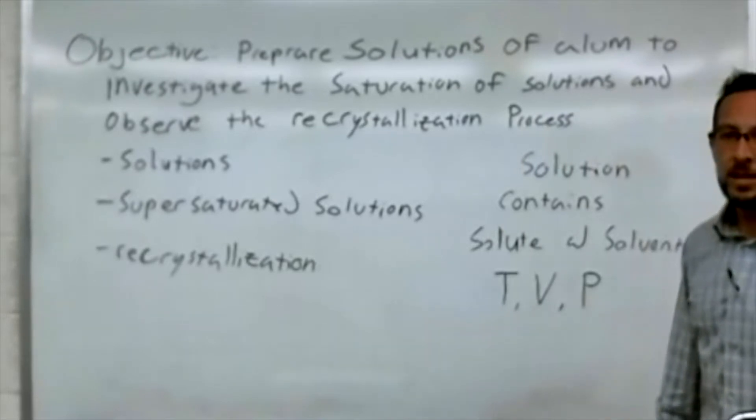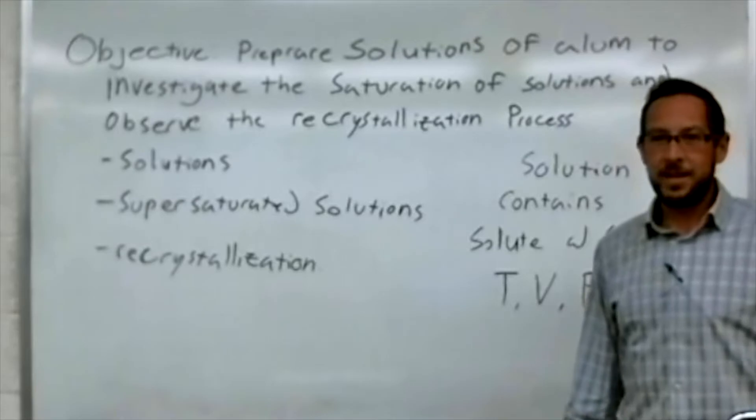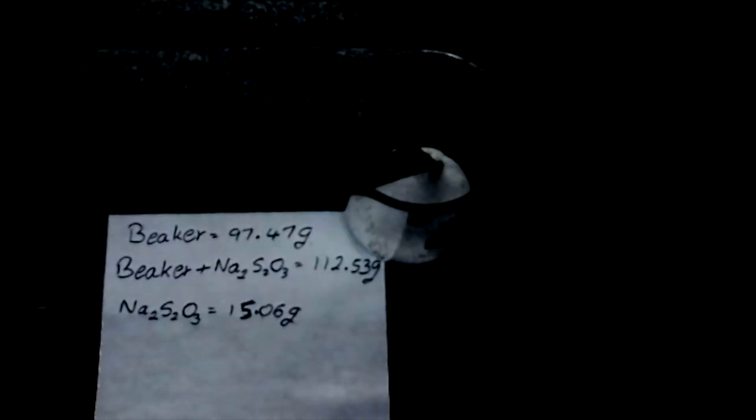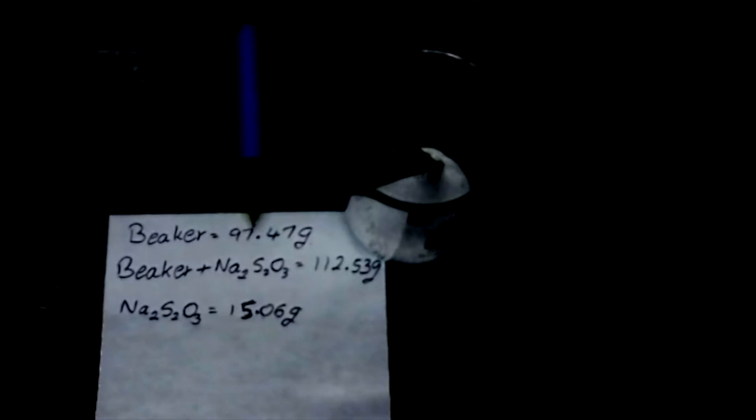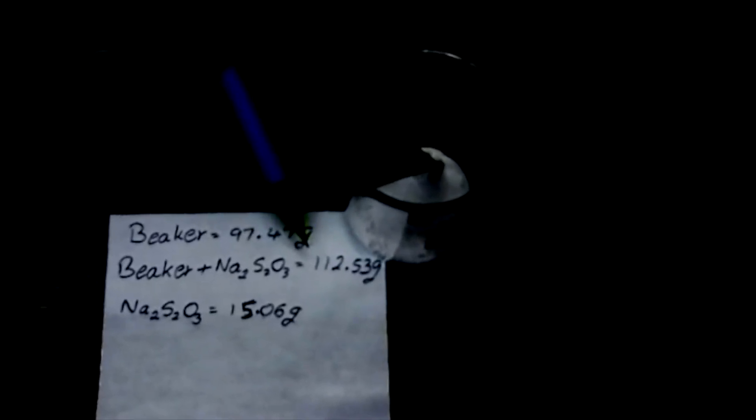So now we will be moving on to the experiment that we are going to be performing for you today. We start our experiment by recording the temperature in the lab, which is 21 degrees Celsius. We then recorded the mass of our beaker, which was 97.47 grams. We were asked to place between 14.8 and 15.2 grams of sodium thiosulfate. We took the recording of our beaker plus sodium thiosulfate on the balance to be 112.53 grams. Subtracting the mass of the beaker, we came out with 15.06 grams of the sodium thiosulfate, which is well within the range of 14.8 to 15.2.